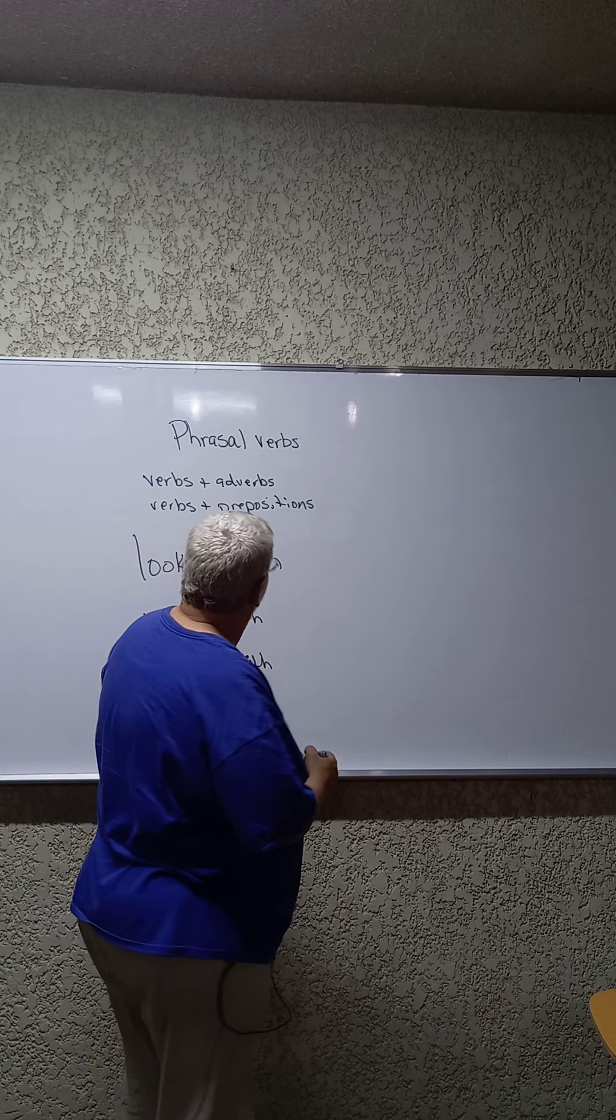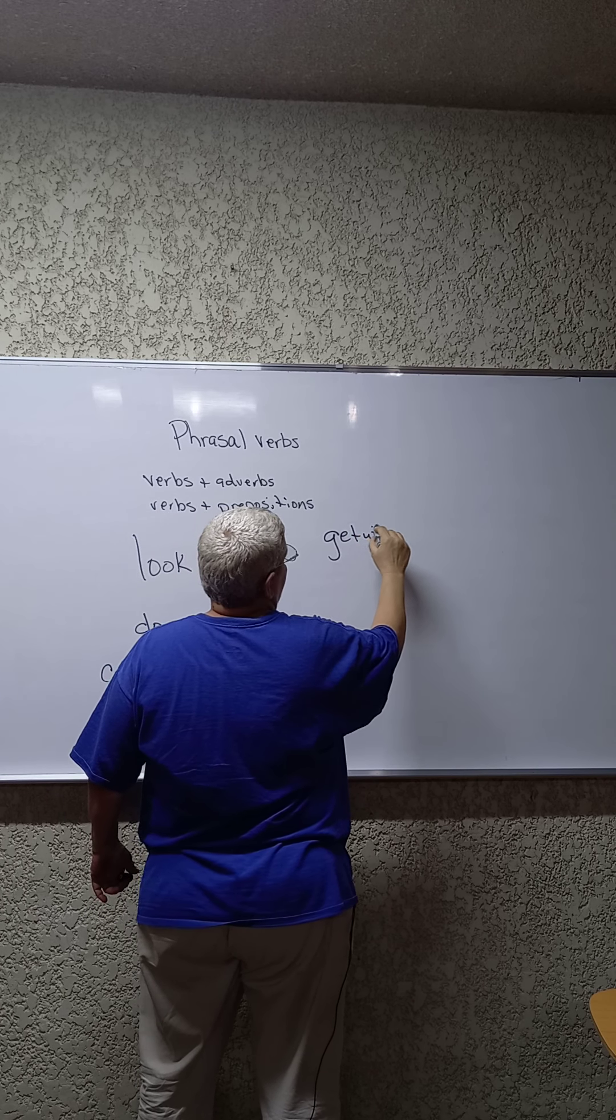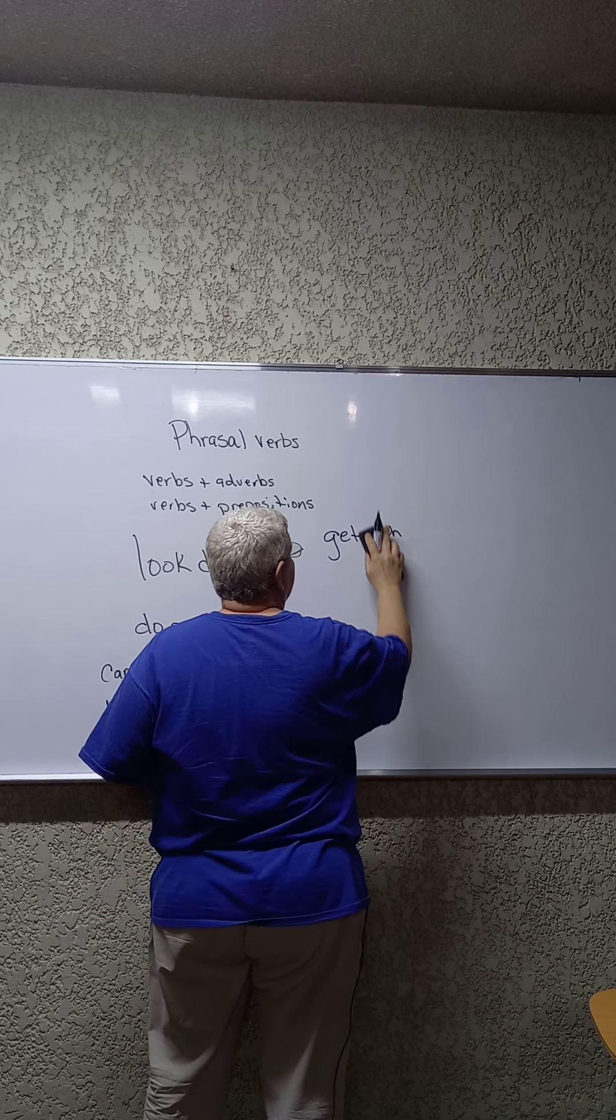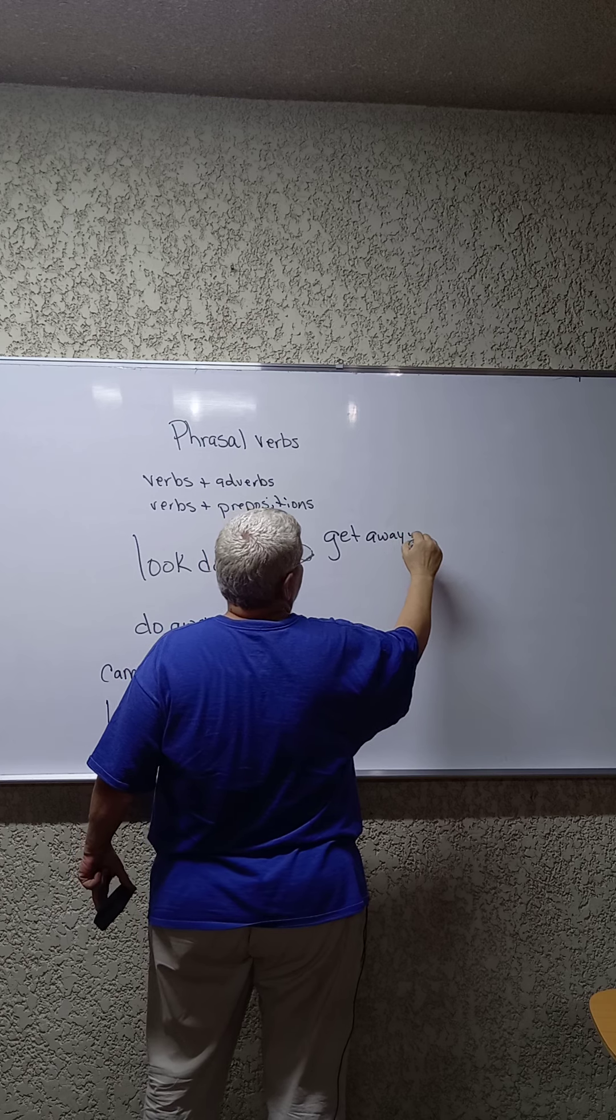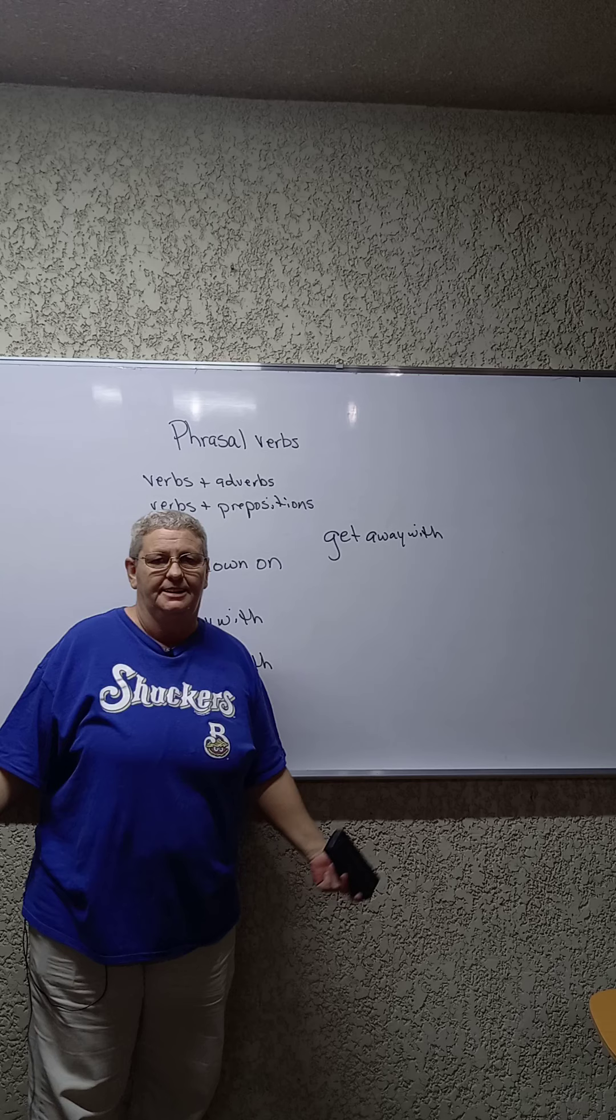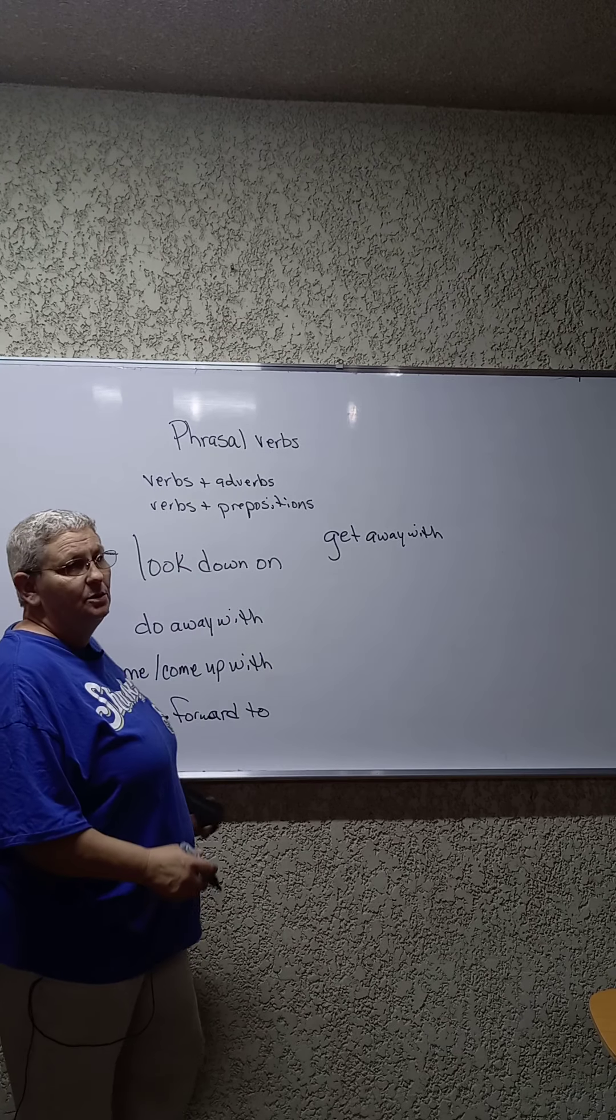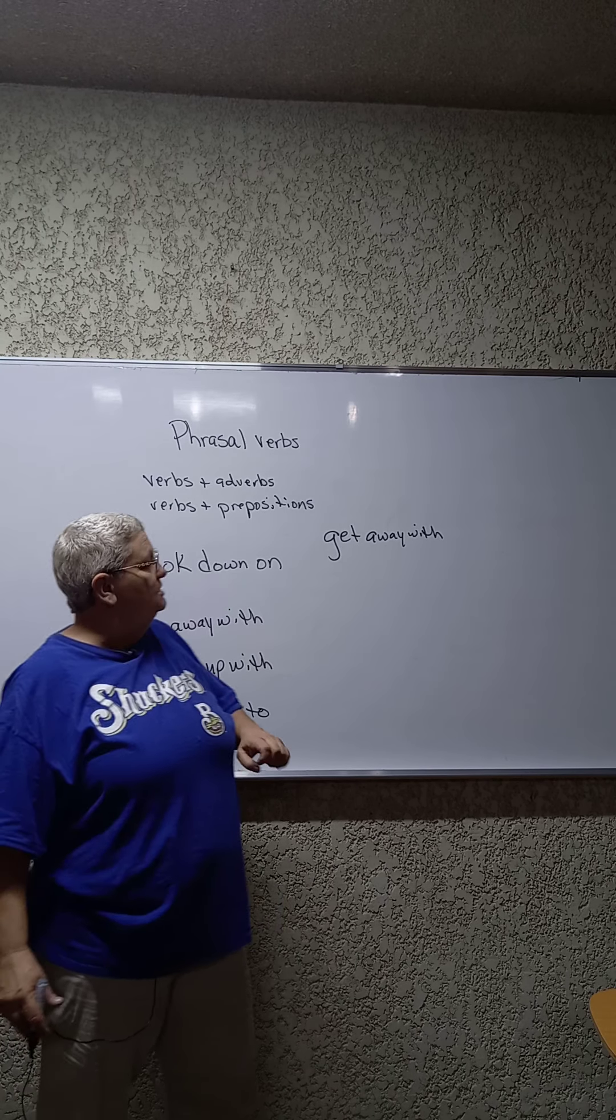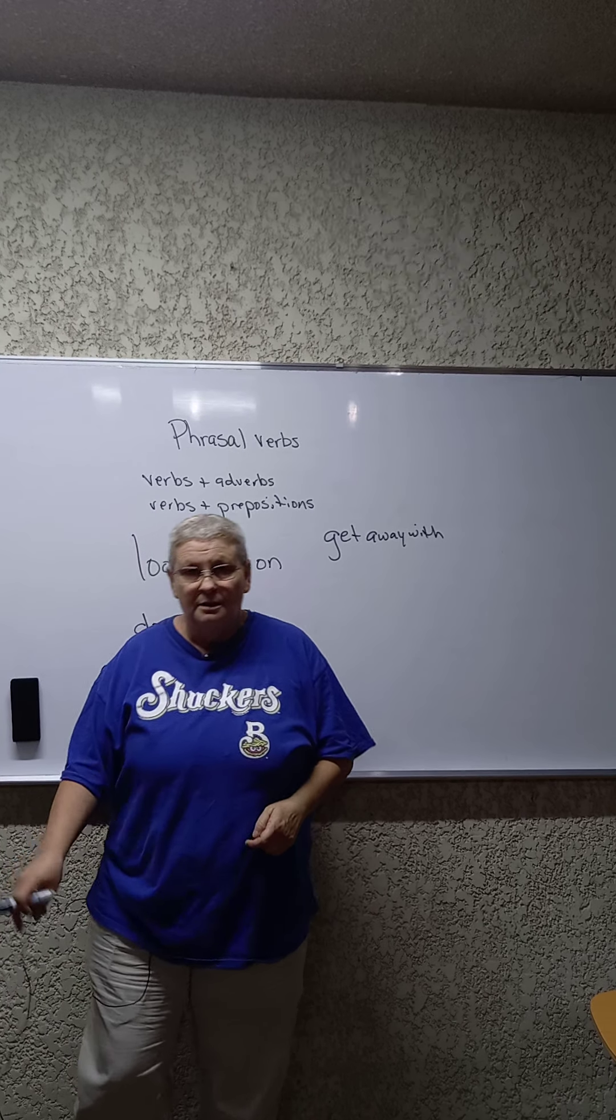Get away with. In America, we use this to refer to someone who never gets in trouble for doing anything. They do stuff, but they never get in trouble for it. So they get away with everything. The expression we use is, he gets away with murder.